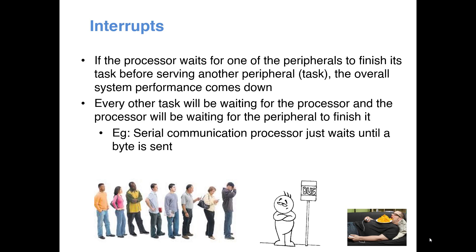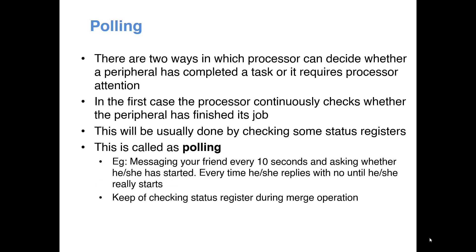What you prefer is to do the print operation in parallel and have your computer do other things. There are mainly two ways of communication between the peripheral and the processor for synchronization. One method is polling, which we have discussed before. In polling, the processor keeps on checking the peripheral to decide whether it has finished a particular task or not.